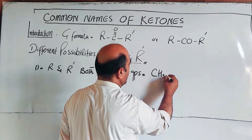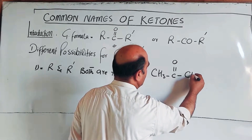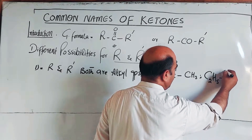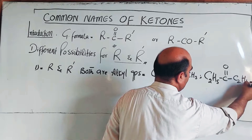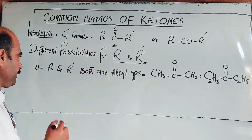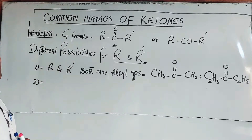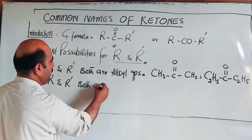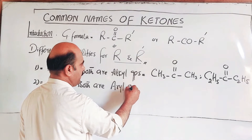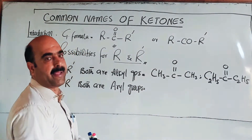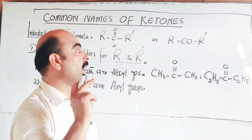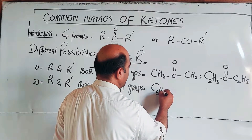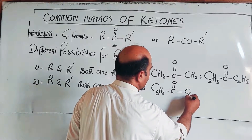Alkyl is the simplest group. For example, methyl CH3 or ethyl C2H5 - these are alkyl groups. So the first possibility is R and R' are both alkyl groups. Now for aryl groups: when you take an aromatic ring, benzene, and remove one hydrogen atom, the remaining group is called an aryl group. The aryl group is represented by C6H5, which is a phenyl group.